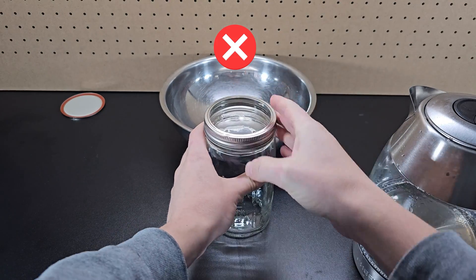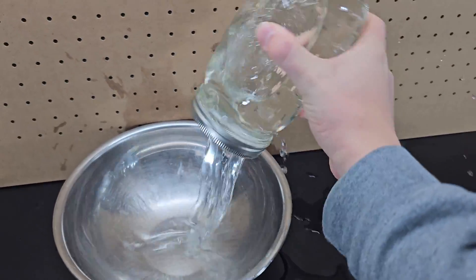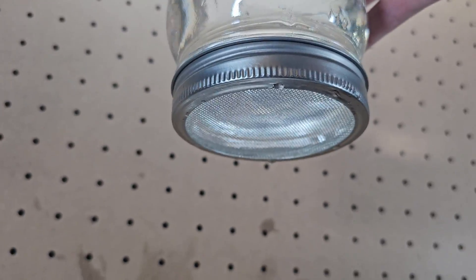I didn't only take the seal off the jar, I replaced it with a mesh screen which does help the water's surface tension keep most of the water in the jar.